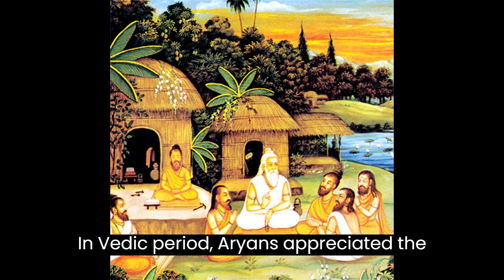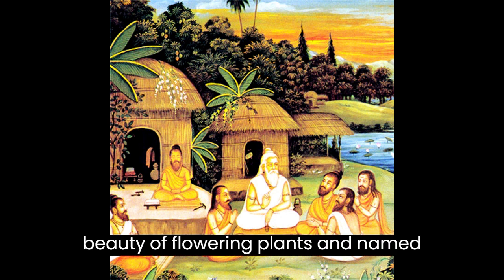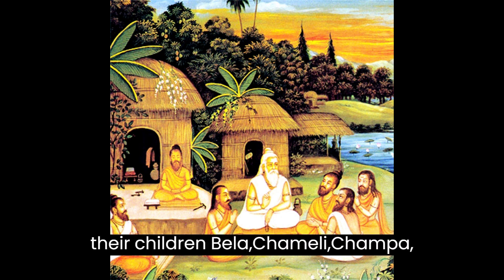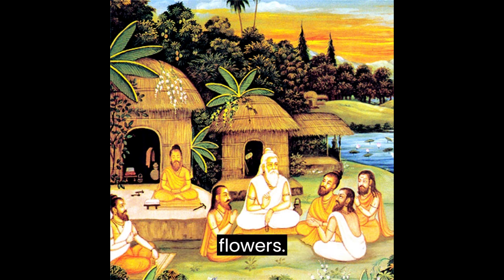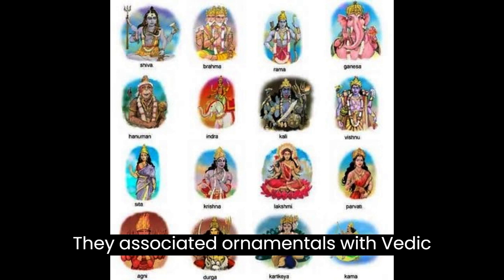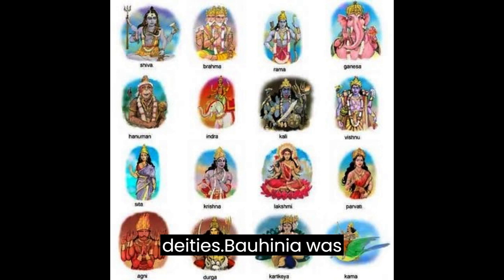In the Vedic period, Aryans appreciated the beauty of flowering plants and named their children Bela, Chameli, Champa, Kamal, Madhvi, and Rukmani after flowers. They associated ornamentals with Vedic deities.